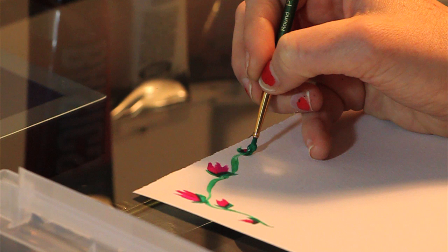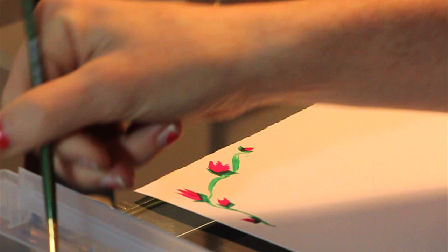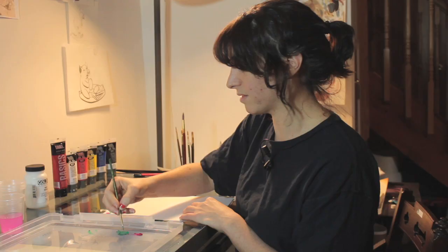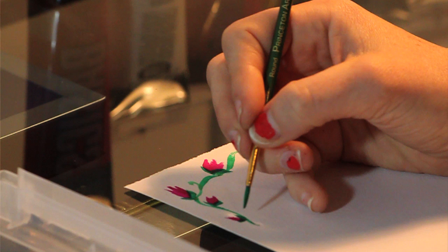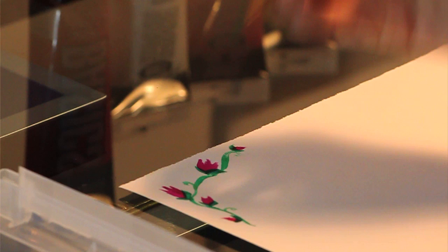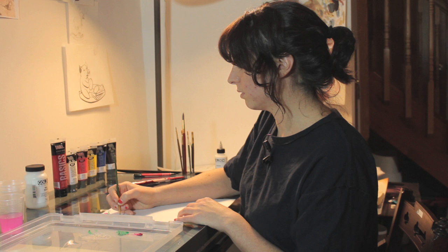All right and another thing that you can do also is rather than just have a straight vine just give it little offshoots, little curlicue sort of things. It'll make it look a little bit more decorative. And then one at the bottom.